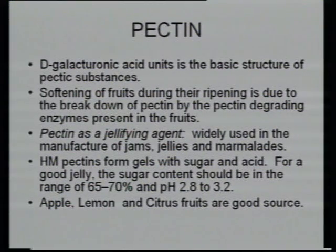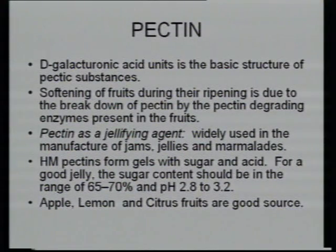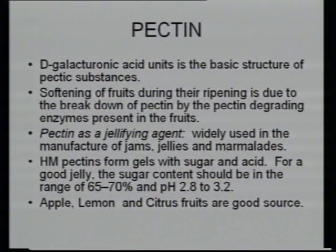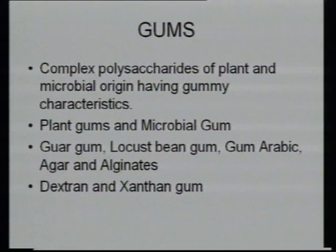The softening of fruit takes place because of the breakdown of pectin. Pectin also plays an important role in gelling. When we manufacture jam, jelly, and marmalade, the composition of pectin plays an important role. If preparing a fruit jam and pectin is not present in natural sources, or if trying a new fruit for jam preparation, the jam will not get a structure — the presence of pectin is must. For a good jelly, there should be good composition of sugar content, pH, and amount of pectin. Apple, lemon, and citrus fruits are good sources of pectin.